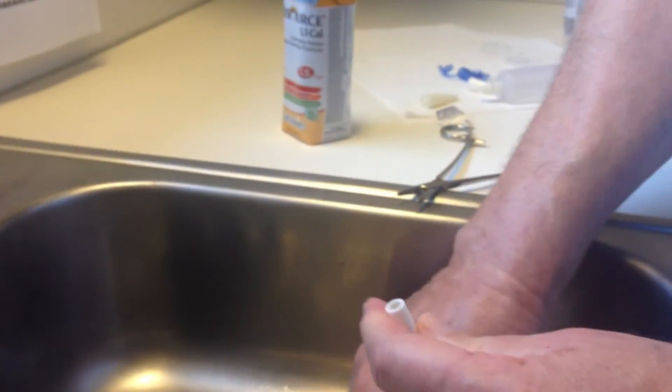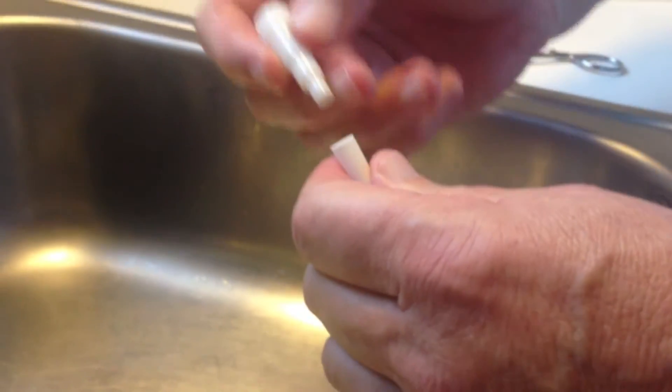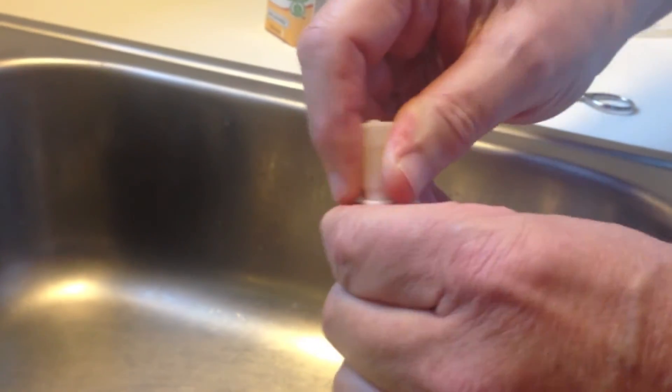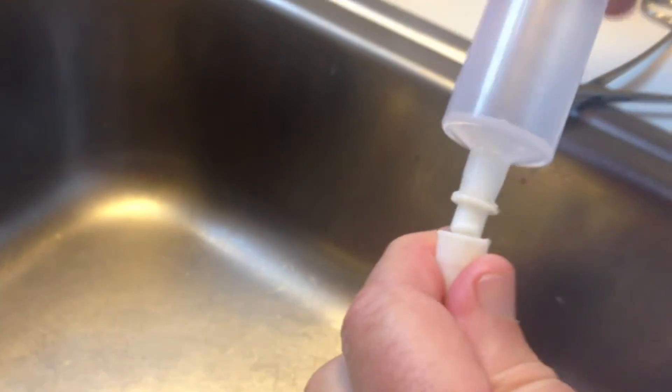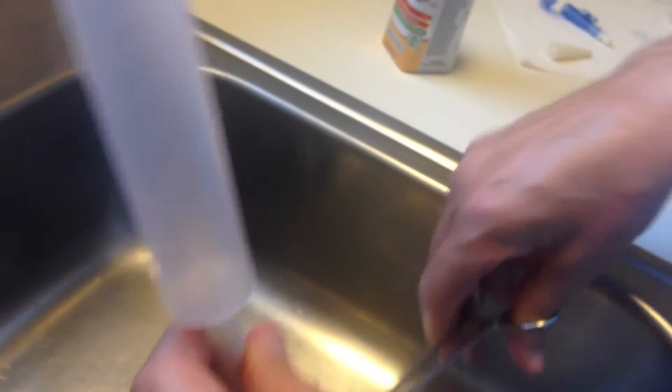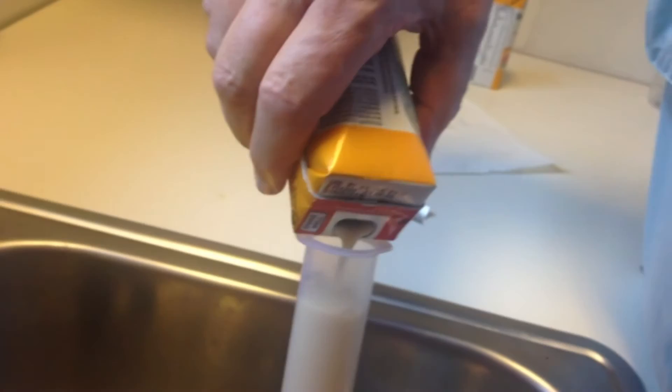Now let's replace this with the patient side 24 French ENFit connector. Then again, we will connect this to the ENFit syringe. Hemostat it off and fill it with 60 cc's of formula.